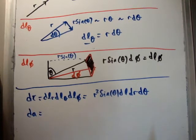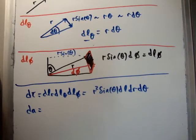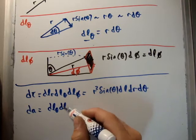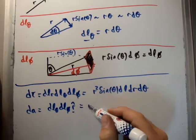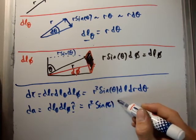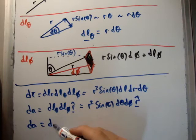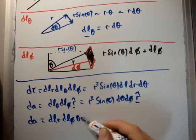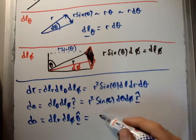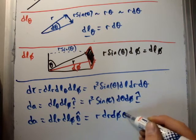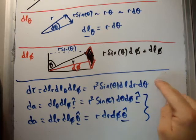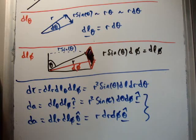For a surface element dA, it depends on what is held constant. Integrating over a sphere with r constant, dA equals r²·sin(theta)·d-theta·d-phi·r-hat. If theta is constant, for example integrating over the xy plane, dA equals r·dr·d-phi·theta-hat. Those are two area elements, and that's the volume element in spherical coordinates. Thanks for watching — please pass it on to your friends, subscribe to my channel, and visit universityphysicstutorials.com.